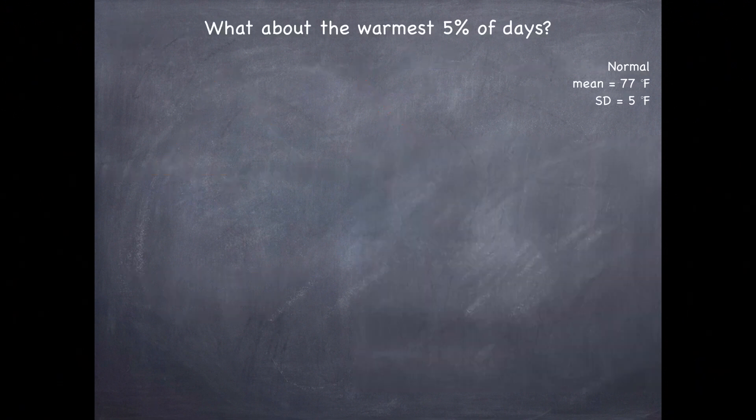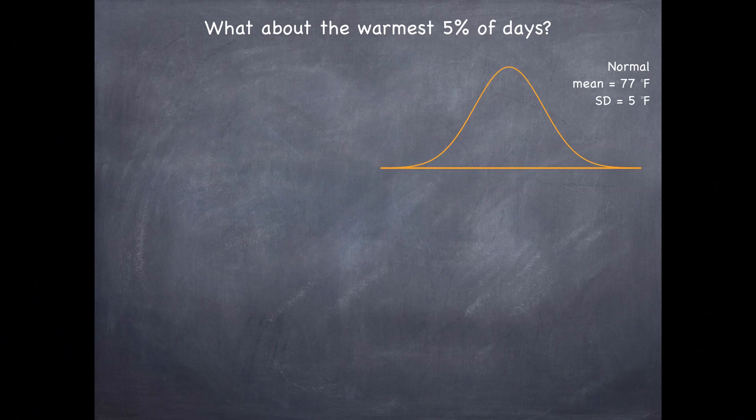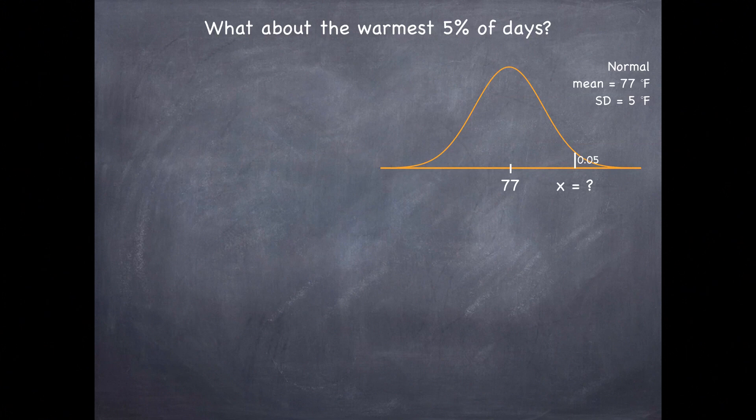Let's try another one. What about the warmest five percent of days? Let's draw the normal curve again, mark our mean. This time since we're interested in the warmest five percent of the days we're going to be on the upper end of the distribution. About five percent here and once again we're looking for an unknown x.